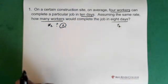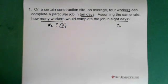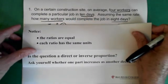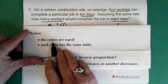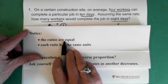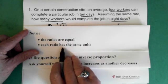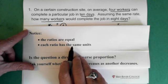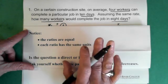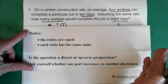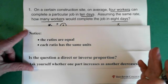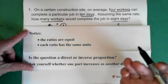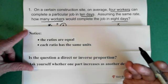And remembering when we're working with inverse proportion, the ratios have to be equal, and each ratio has the same units. That piece is really important. And again, when you're working with a question, you stop and ask yourself, is it inverse or direct proportion? And does one part increase as the other decreases?